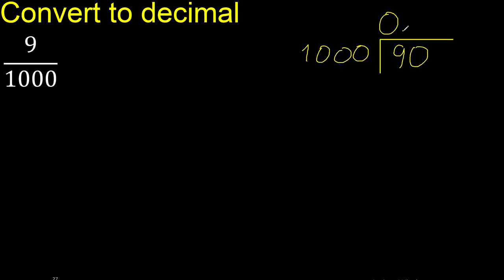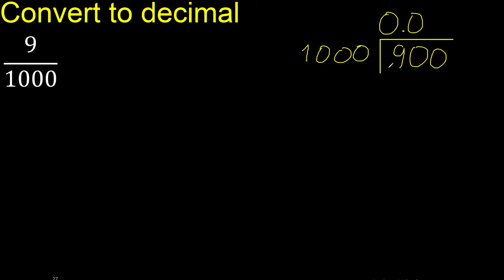Here, 0 point. 90 is less, therefore 0. 900 is less, therefore 0.